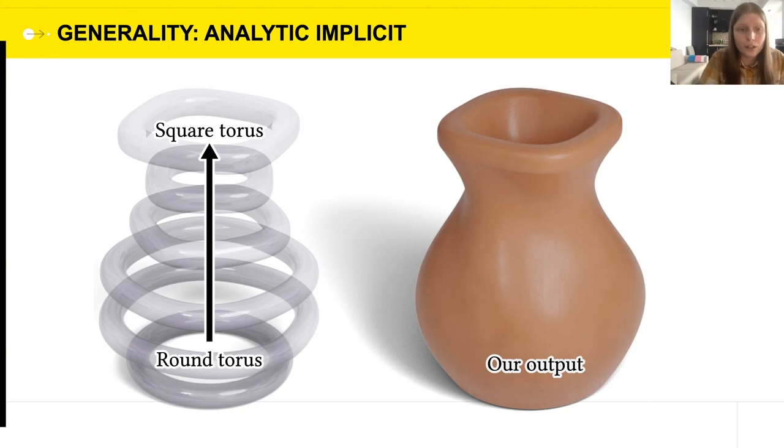There are also shapes that have analytic implicit representation, for example, a torus. We can transition between an L2 torus, one whose cross-section is a disk, and an L1 torus, one whose cross-section is a square, to obtain a ceramic vase.